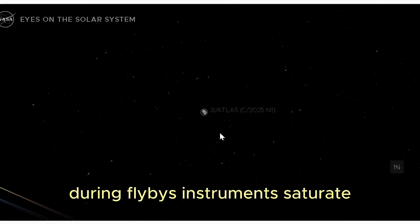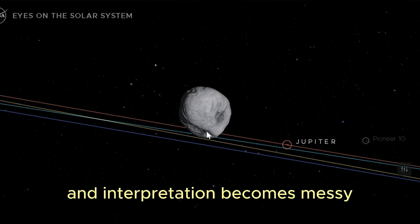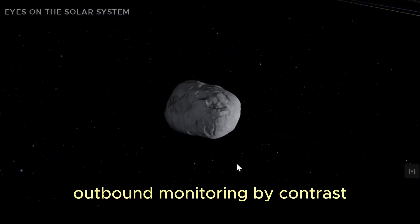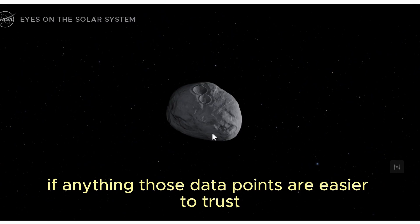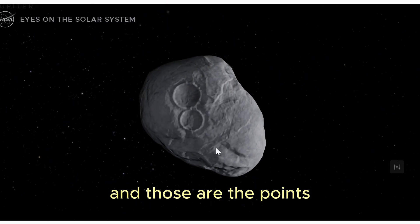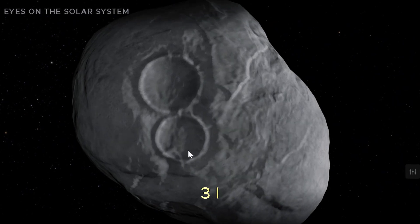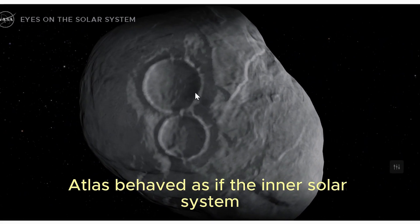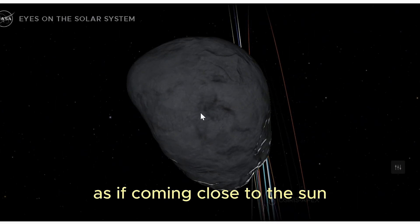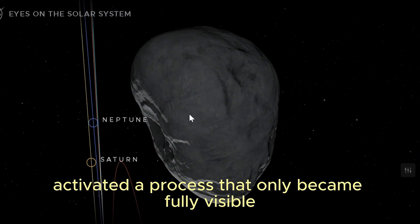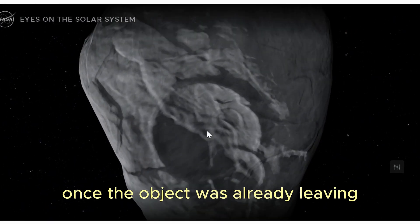During flybys, instruments saturate, pointing changes quickly, and interpretation becomes messy. Outbound monitoring, by contrast, tends to be cleaner and more controlled. If anything, those data points are easier to trust. And those are the points suggesting something counterintuitive. 3I Atlas behaved as if the inner solar system was not the destination, but the trigger, as if coming close to the sun and inner planets activated a process that only became fully visible once the object was already leaving.